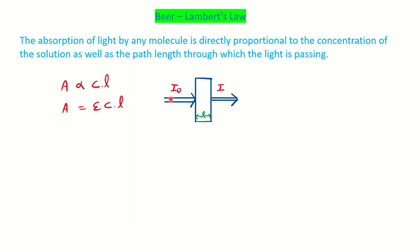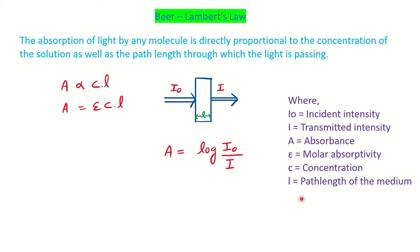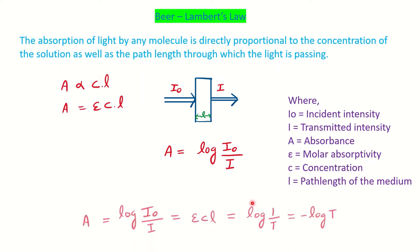You can understand this by taking a cuvette where the sample is loaded inside it and the incident intensity is falling on it. Some amount of the radiation is going to be absorbed and the rest is going to be transmitted. L is represented by the thickness or the path length of the medium. The key terms are: incident intensity, transmitted intensity, absorbance, molar absorptivity, C for concentration, and L for path length.